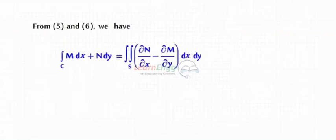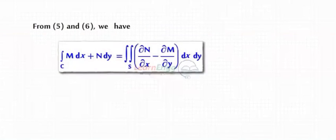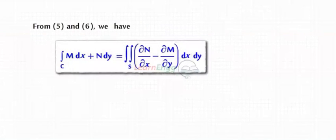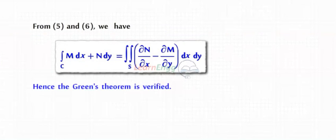From equations 5 and 6, we have the closed integral of M dx plus N dy equals the double integral of (∂N/∂x minus ∂M/∂y) dx dy. Hence Green's Theorem is verified.